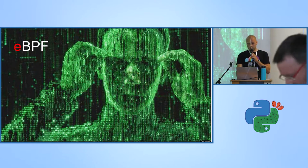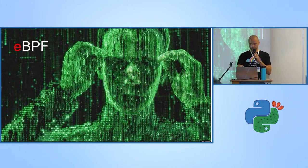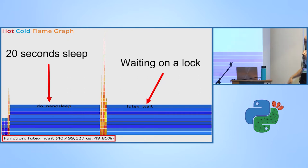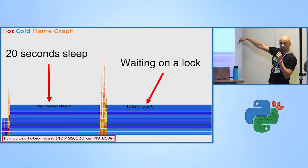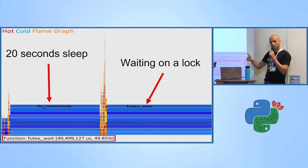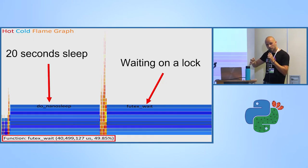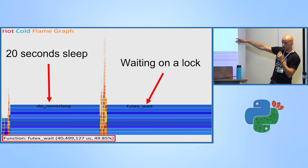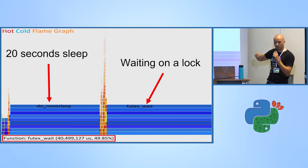We can get a visualization of the whole runtime as something like this — a graph called a hot-cold flame graph. The blue color shows us the call stack of what our process was doing when it was not running on the CPU, meaning when it was idle and why. The orange colors show where it was running on the CPU.